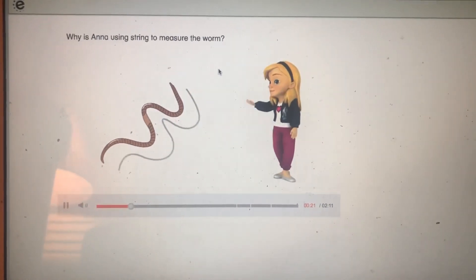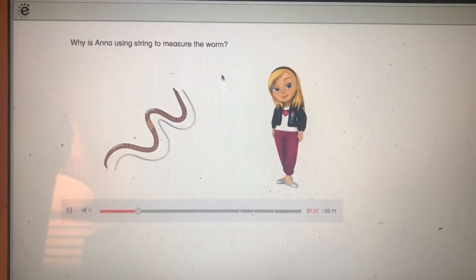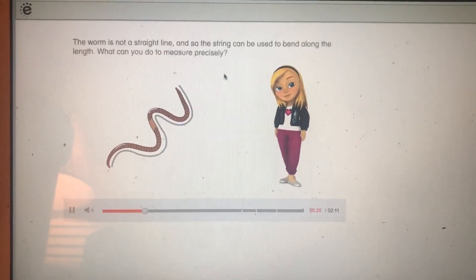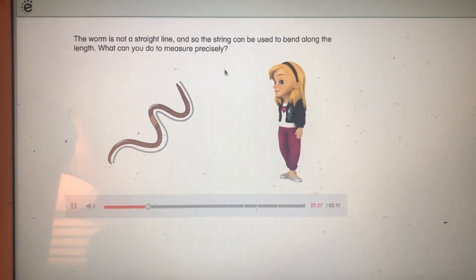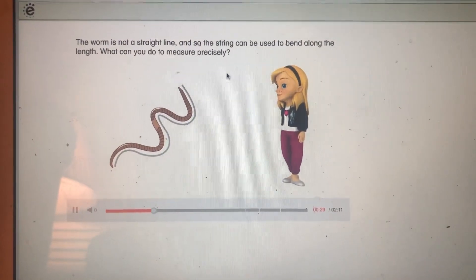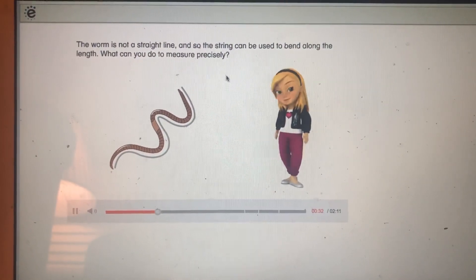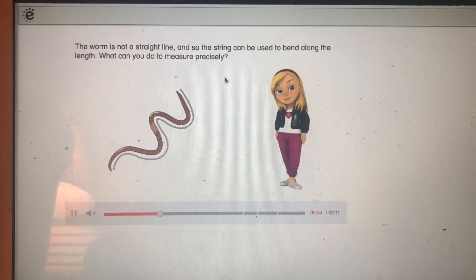Why is Anna using string to measure the worm? The worm is not a straight line, and so the string can be used to bend along the length. What can you do to measure precisely?